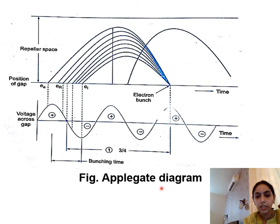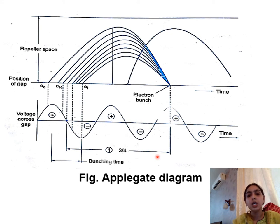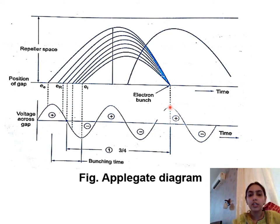The Applegate diagram shows bunching for the 1¾ mode. The transit time — the time for an electron to leave the cavity, travel to the repeller space, and return back to the cavity — is important here. The electrons must return to the cavity gap when the gap voltage is maximum, so they can transfer their kinetic energy to the cavity fields. The possible modes are ¾, 1¾, 2¾, 3¾, etc. Electrons can return after 1¾, 2¾, or 3¾ cycles.